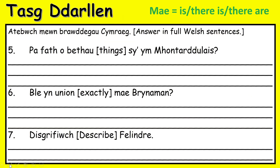Moving on to questions 5, 6 and 7. This time we need you to answer in full Welsh sentences. Cwestiwn 5: pa fath o bethau sy' ym Mhontarddawe? Cwestiwn 6: ble yn union mae Bryn-amman? Cwestiwn 7: disgrifiwch Felindre. You might have some prior knowledge of these villages, but what we need you to do is go back and check for the answers in the text. The sentences you can lift from the text and use as answers.